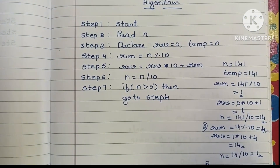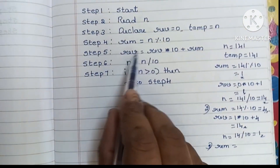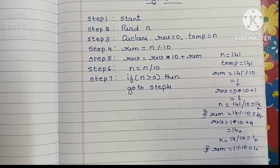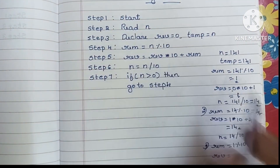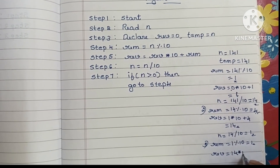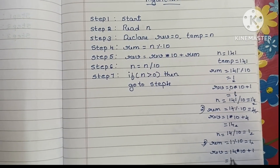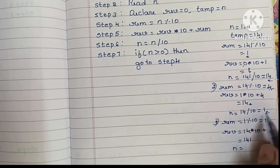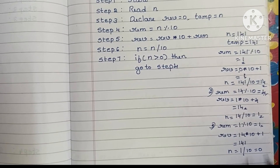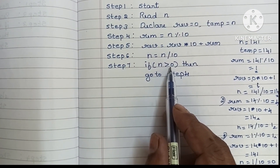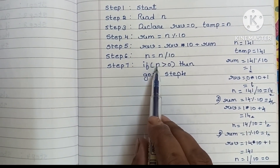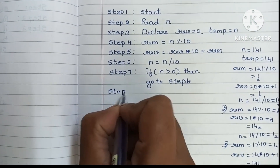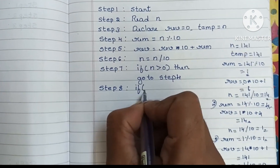We repeat step 4 again. The remainder: n is 1, so 1 modulo 10 gives remainder equal to 1. Find reverse: reverse = 14 into 10 plus 1, so reverse becomes 141. Update n: 1 divided by 10 gives n equal to 0. Check if n greater than 0 — n is 0, so the condition is false, and we move to step 8.